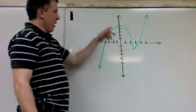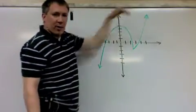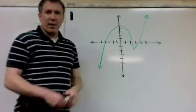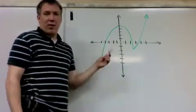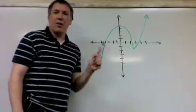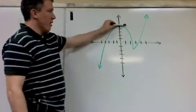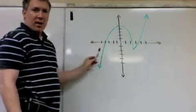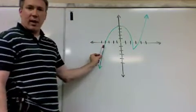For example, at the top peak the tangent line would be horizontal because the graph itself is going that way. Imagine you're in a car driving along this road — the direction your car is facing is the direction of the tangent line. At the peak, the car would be facing horizontally.